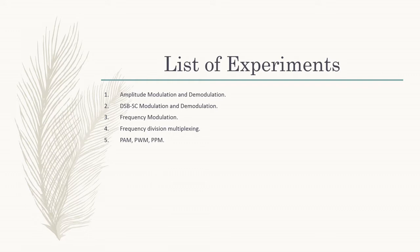Here PAM means Pulse Amplitude Modulation, PWM means Pulse Width Modulation, and PPM means Pulse Position Modulation. The sixth experiment is design and verification of automatic gain control circuit.